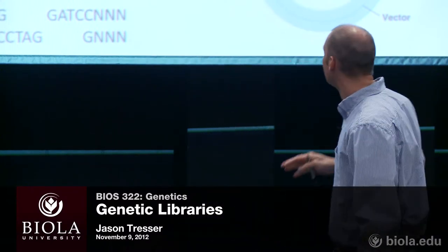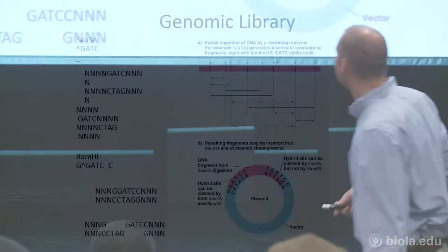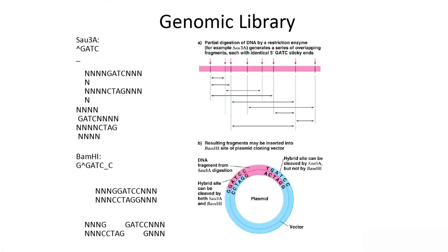A genomic library is when you take an entire genome — illustrated here as a pink line — and fragment it through a partial digest. A partial digest is when you digest with a restriction enzyme but don't give it time for every piece of the genome to get cut at every single site.